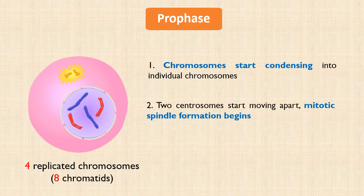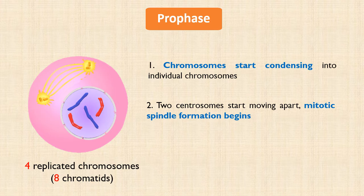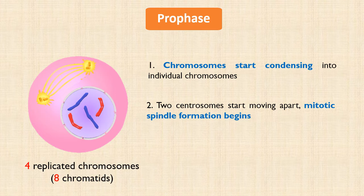The second event that takes place is that the two centrosomes present outside the nucleus now start moving apart. As they move apart, assembly of the spindle apparatus begins. The cytoskeleton of the cell disassembles and microtubules of the spindle apparatus start assembling. The nucleolus also disappears. We know that the mitotic spindle will segregate chromosomes later in mitosis, but for that to happen, contact must take place between the mitotic spindle and the chromosomes. The next event that takes place is the breakdown of the nuclear envelope, and with that, the next phase begins.